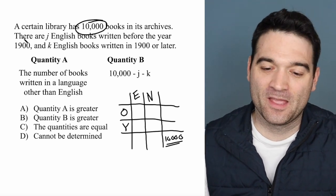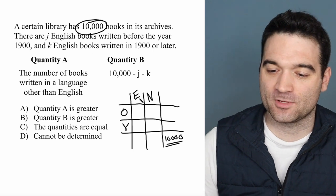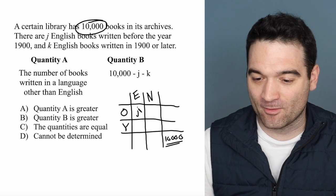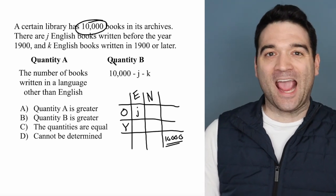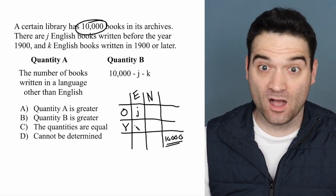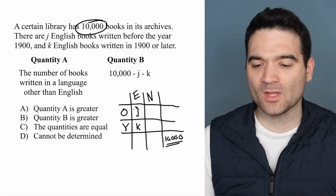Well, let's start filling this table. There are J English books written before the year 1900, so English before 1900, so old, is going to be that right there. And there are K English books written in 1900 or later, so English young, right? Call that K right there.